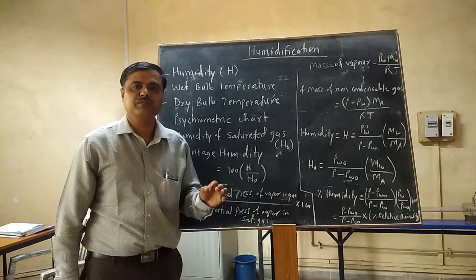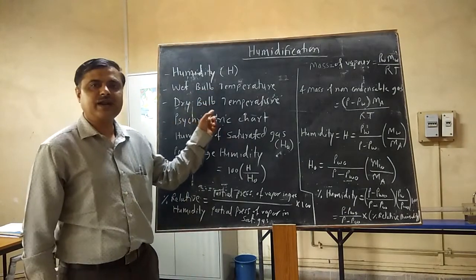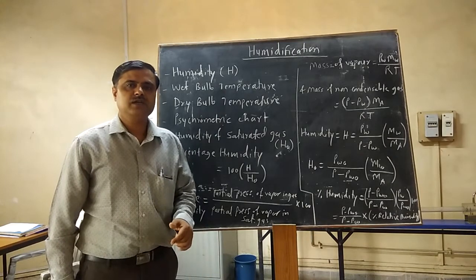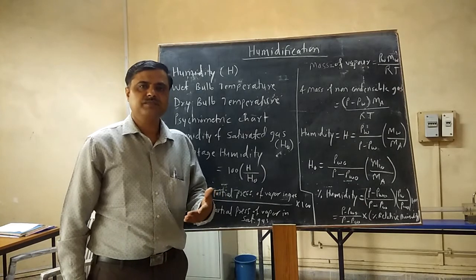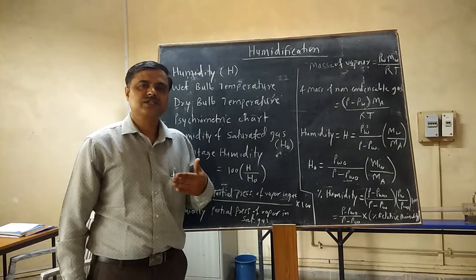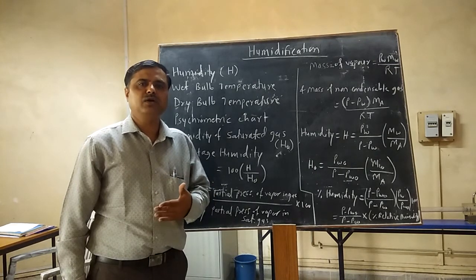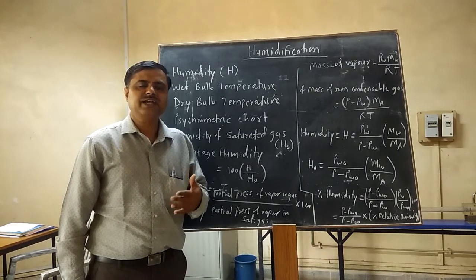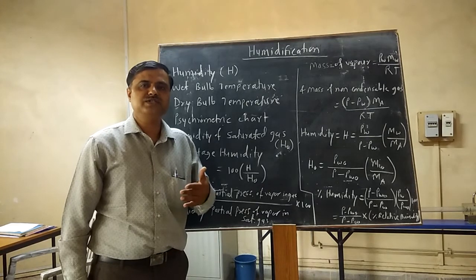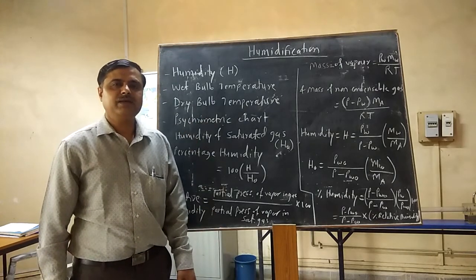This is called the wet bulb temperature. Dry bulb temperature is nothing but the temperature measured by the ordinary thermometer. The wet bulb temperature is slightly lesser than that of the dry bulb temperature — DBT is slightly higher than WBT.